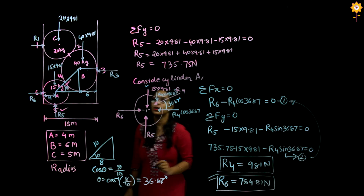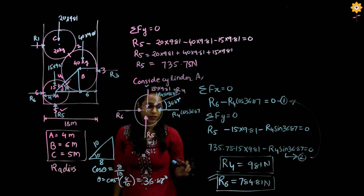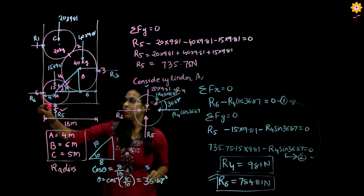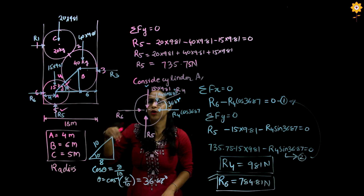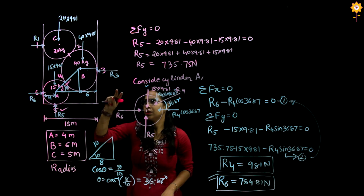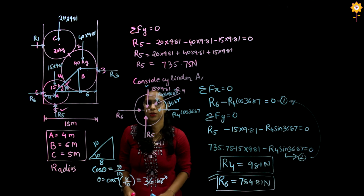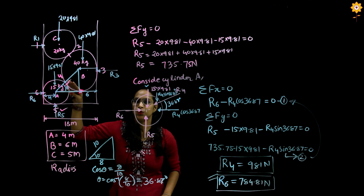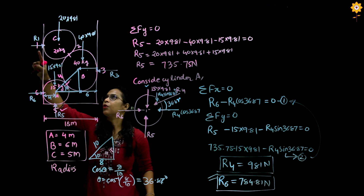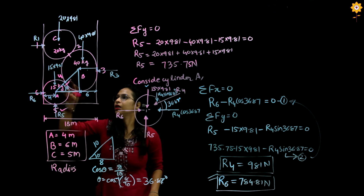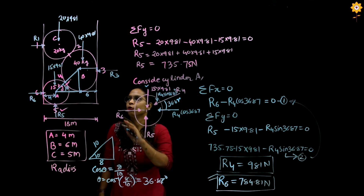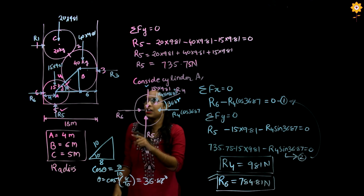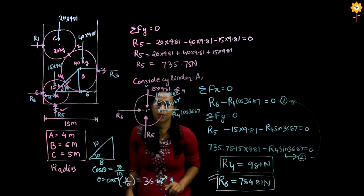So R6 equals 784.81 newtons. Whenever we have a problem about finding a particular reaction force and not all forces, just go for the shorter method. Do not attempt to find everything that is not asked. If the question requires finding R1, R2, R3, R4, R5, and R6, then we need to separate the cylinders and find each reaction individually. This completes the solution.